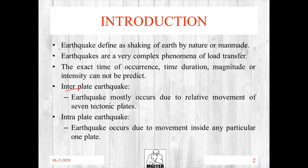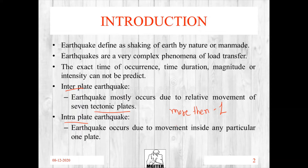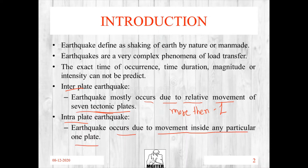There are two types of earthquakes: inter-plate and intra-plate. Inter-plate earthquake depends on more than one tectonic plate — it occurs at the border of plates due to the relative movement of tectonic plates. Intra-plate earthquake occurs due to movement inside any particular single plate; it is called an intra-plate earthquake.